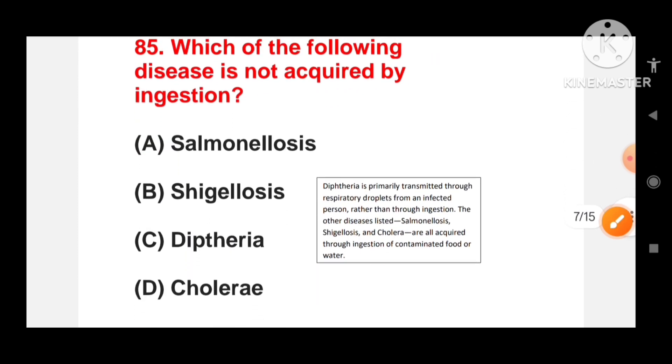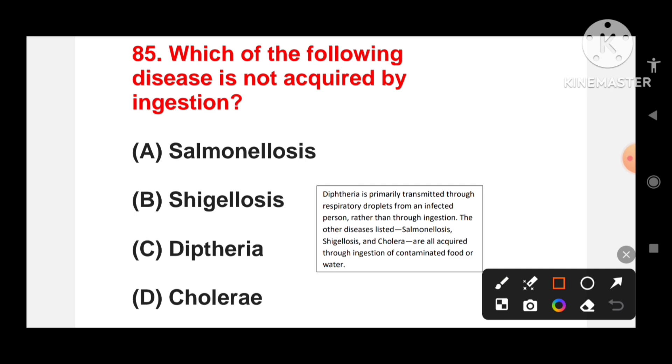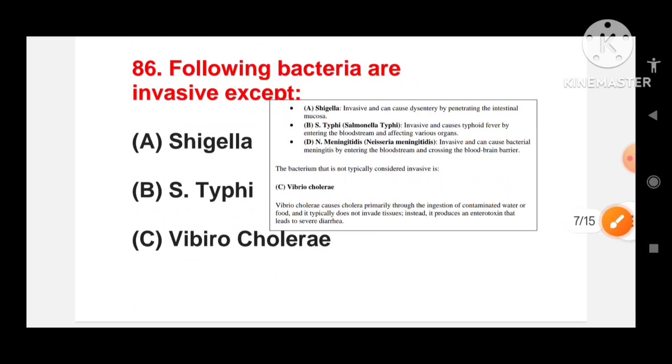Which of the following disease is not acquired by ingestion? Salmonellosis, shigellosis, diphtheria or cholera? Diphtheria is primarily transmitted through the respiratory droplets from an infected person, not by ingestion. Salmonellosis, shigellosis and cholera are acquired through the ingestion of contaminated food or water, but diphtheria is not acquired by ingestion.